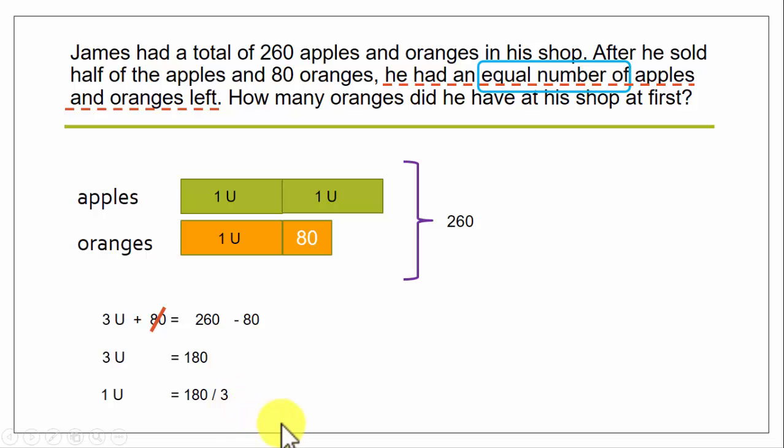And as you know, one unit is equal to 180 divided by 3, which is 60. Now let's look at how many oranges did he have at his shop at first. So oranges, as we know here, is one unit plus 80. That was what he had at first. So 60 plus 80, which is 140. So if you want to find out the number of apples he had at first, it's quite simple. He had two units, so each unit is 60, so two units is equal to 120.